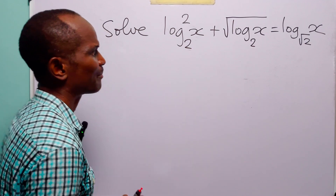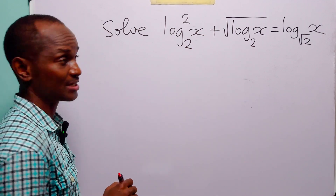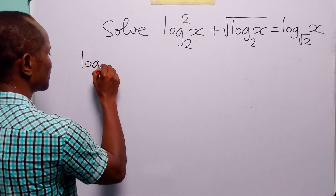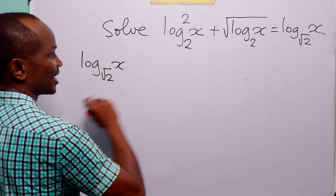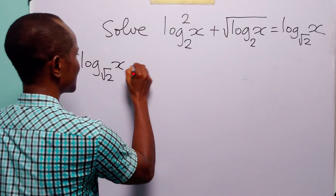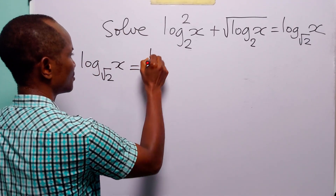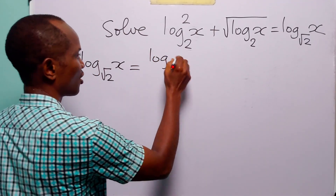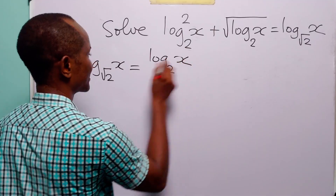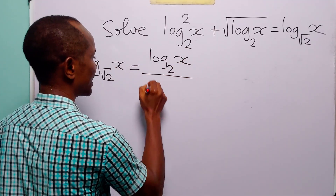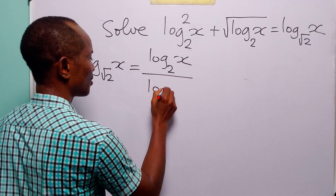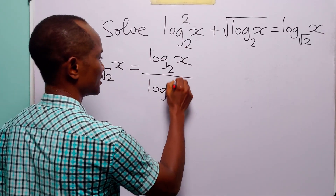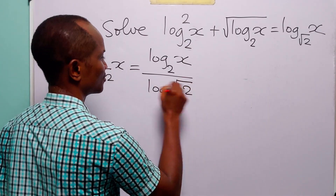When we apply the change of base formula for logarithms, we have that log to base root 2 of x is equal to log to base 2 of x divided by log to base 2 of the old base, which is root 2.